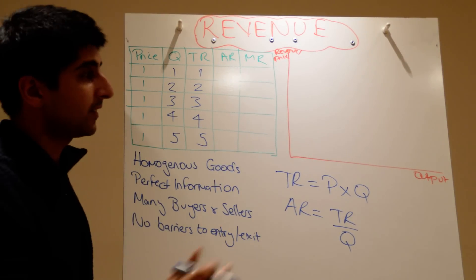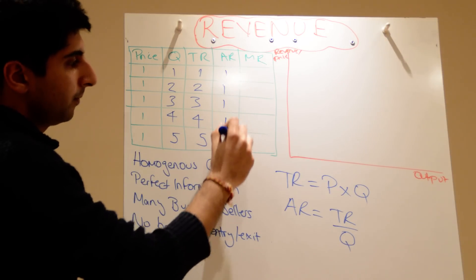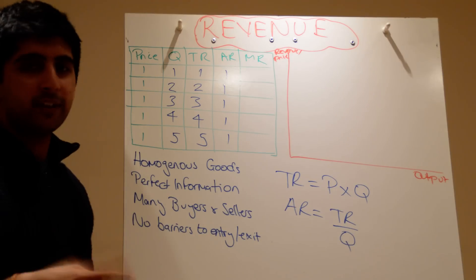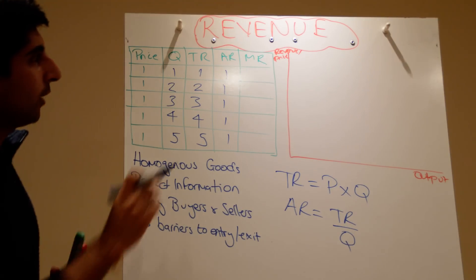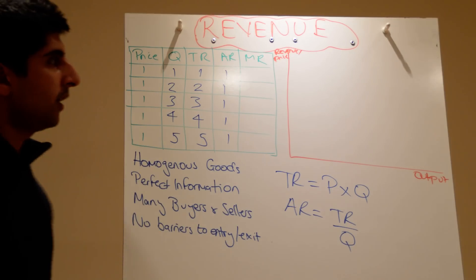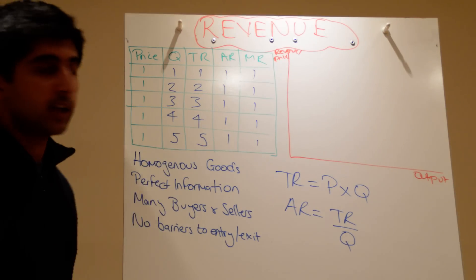Average revenue is just your total revenue divided by the quantity. So TR divided by Q. We're going to work on a little trick with this in a second. But TR divided by Q in each case is just going to be one. And then marginal revenue. Marginal revenue is just the extra revenue generated when we sell one extra unit. So as we increase the number of units sold, how much extra revenue is generated? Again if you just look carefully it's one more in each case. Total revenue increases by one in each case.